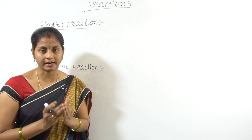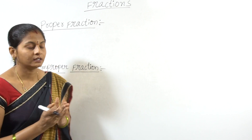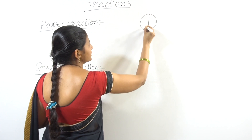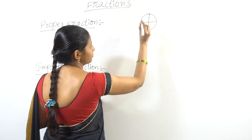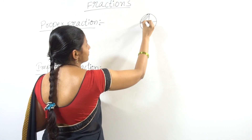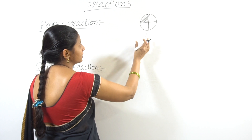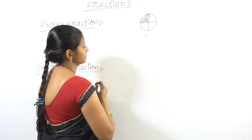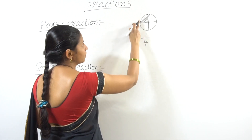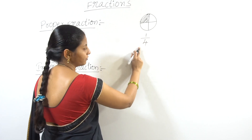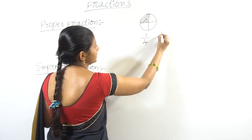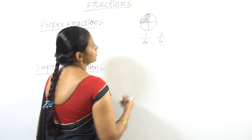For example, I have 4 equal parts. So we have 4 equal parts, and we have 4 pieces. So we have 1 by 4. We also have 3 parts out of 4 — that is 3 fourths.